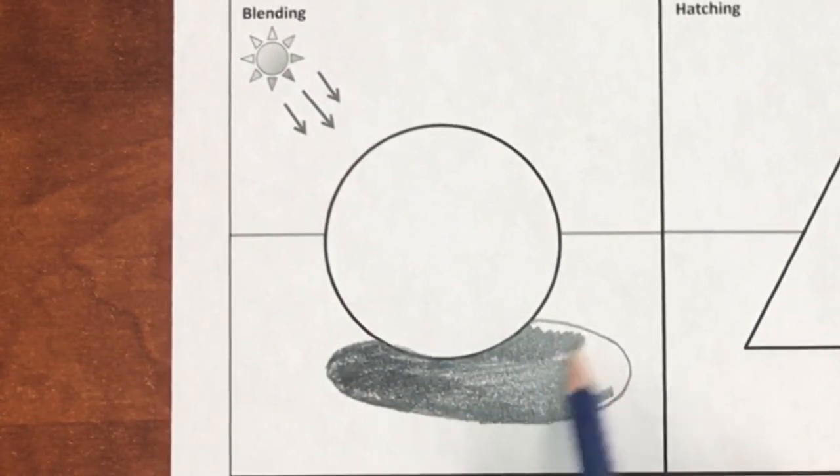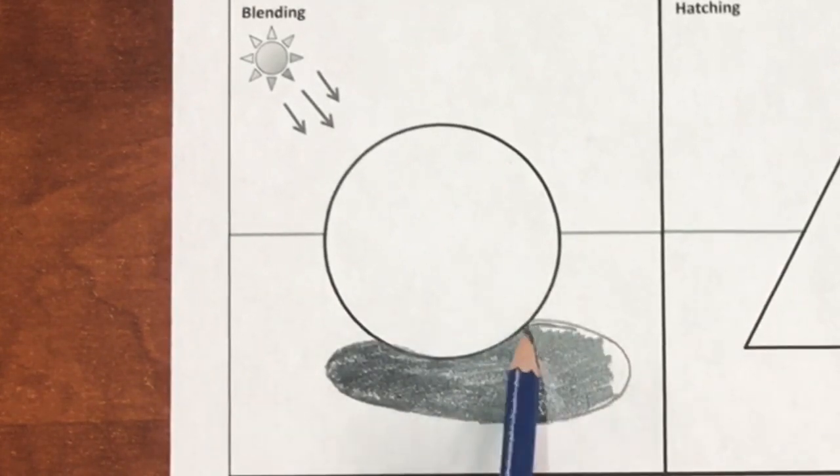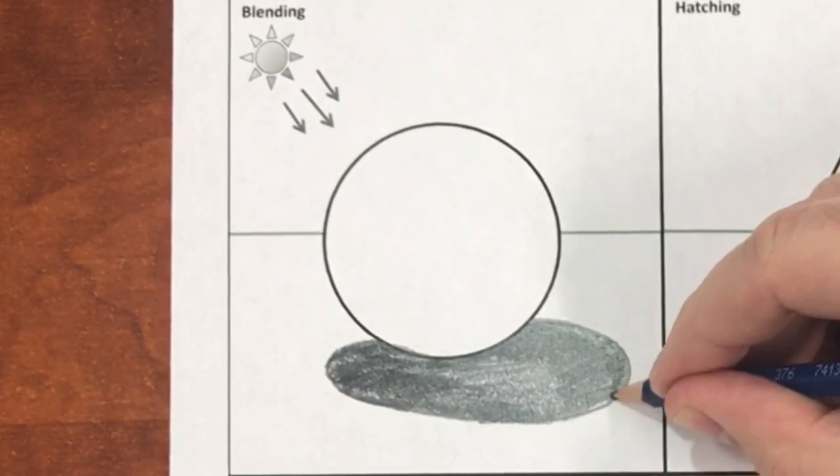First, the area closest and most direct to the light is the brightest. Second, as the light hits the object less directly, the value becomes darker.